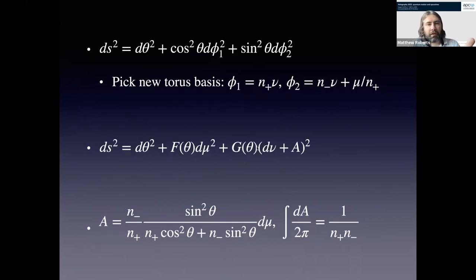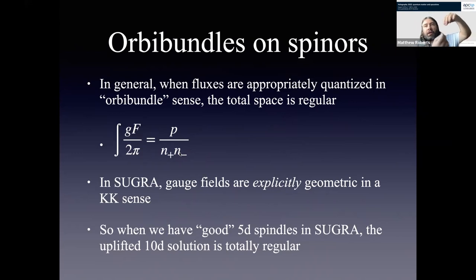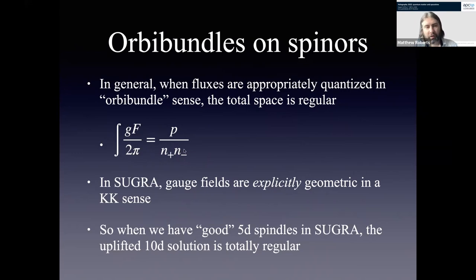This was a particular example of thinking about the 3-sphere as a circle bundle over a spindle. The more general moral is: if I have a spindle and a U(1) bundle over it, as long as all gauge bundles are appropriately quantized — so what would normally be integer-quantized flux is now fractionally quantized with p an integer — this will lift to a total space that is regular.